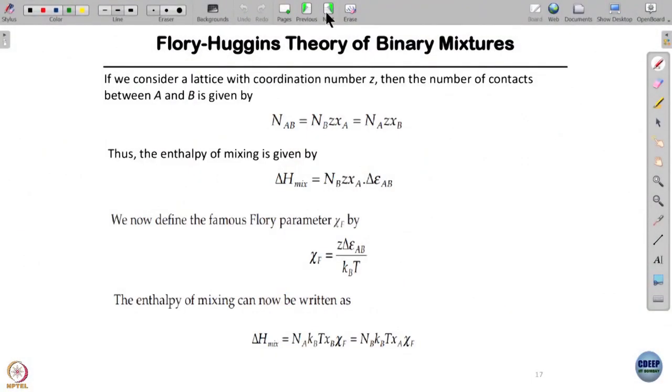We call it discriminant, that captures how different A and B are in their properties and interactions. This is Flory. Flory then said, okay.